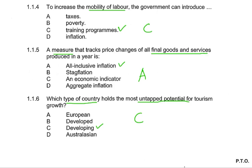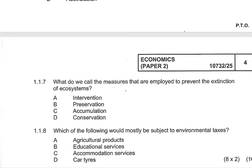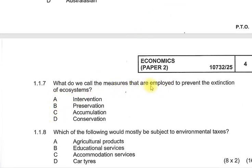Question 1.1.7: What do we call measures that are employed to prevent extinction of ecosystems? We know we are referring to preservation. So B is the correct answer for 1.1.7.